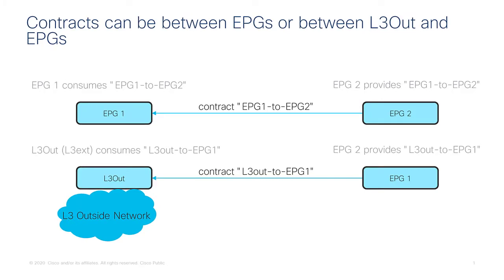The configurations are very similar. The only main difference between using EPGs and configuring the layer 3 out connectivity is that the layer 3 external is slightly different than regular EPGs, and in a few slides we'll talk about the key differences.